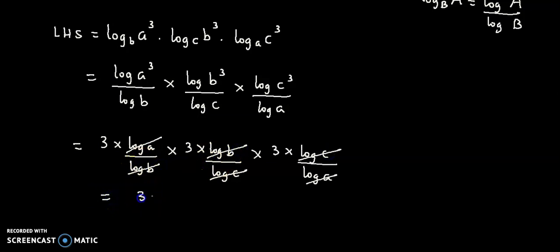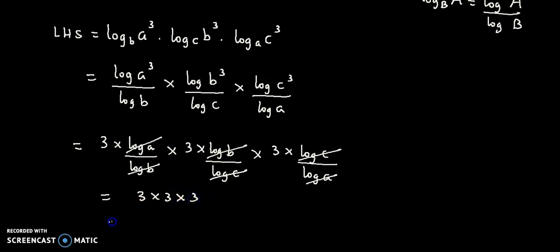What remains is 3 times 3 times 3, that is equal to 27, which is equal to the right hand side. Thank you.